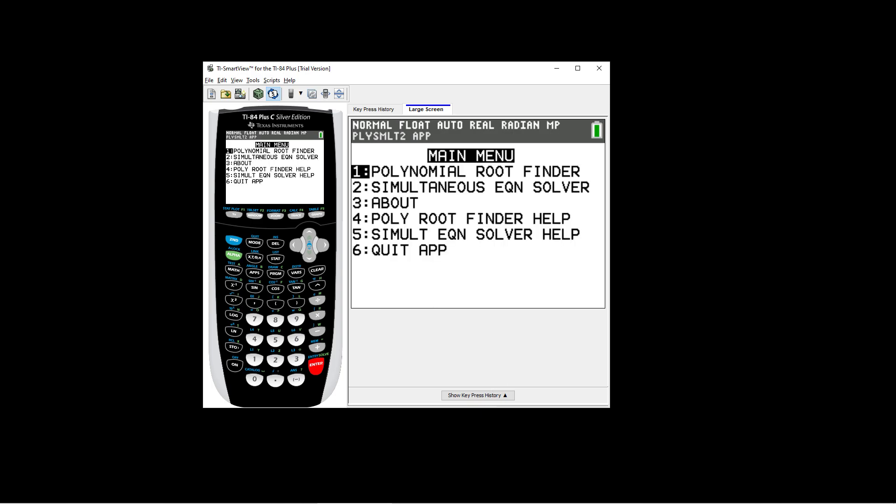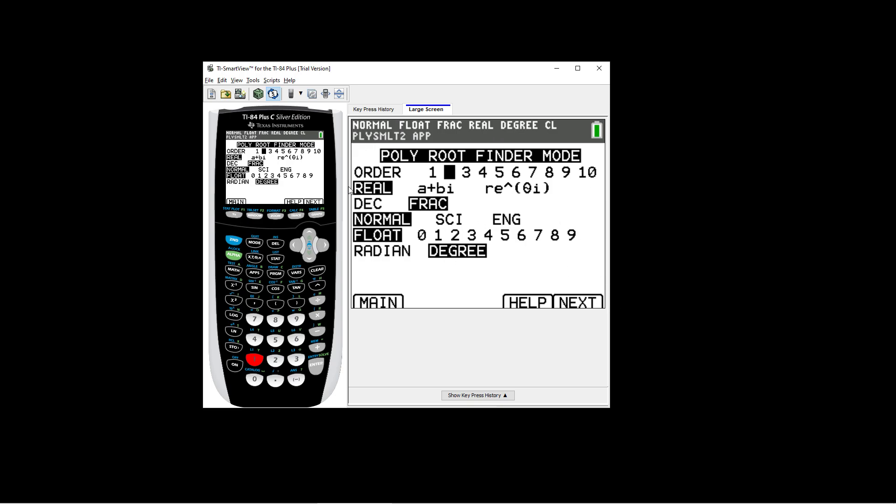We're going to select the first option, polynomial root finder, to get the roots of this quadratic expression. You shouldn't have to change any settings in this configuration. But in case yours defaults to something different, make sure it's set to what you see here. In the third row, some calculators have auto and decimal instead of decimal and fraction. You can leave it on auto if yours has that selected. With the configuration set, we're good to continue. So go ahead and press the graph button at the top right here underneath the next.